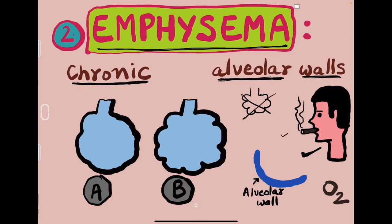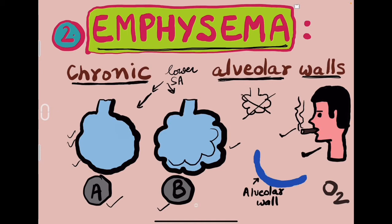Cigarette smoking is the main cause here. Look at diagrams A and B. Which of the two alveolar sacs has a lower surface area — A or B? Yes, A's surface area is very low as compared to B. Because B is curved, it has more surface area — that belongs to a normal person. And A belongs to a smoker suffering from emphysema, whose surface area has been greatly reduced for taking up, carrying, and absorbing oxygen.